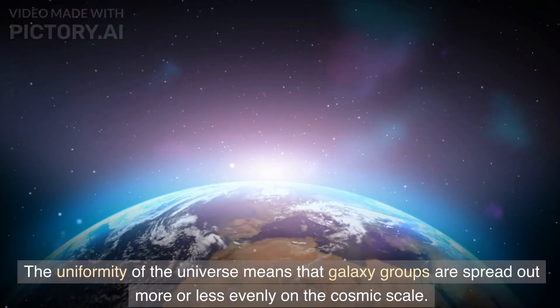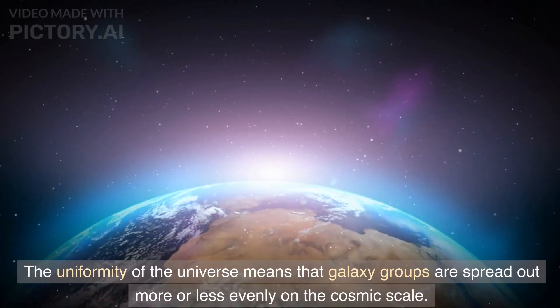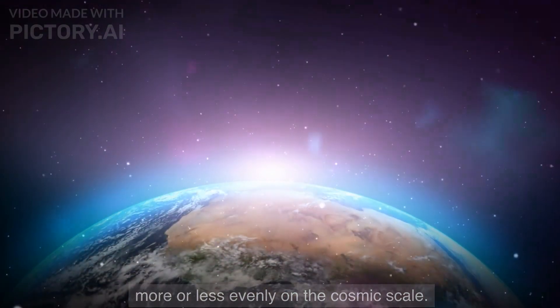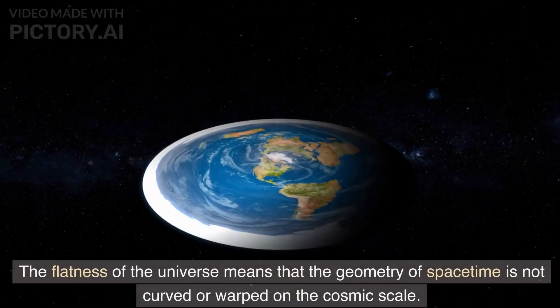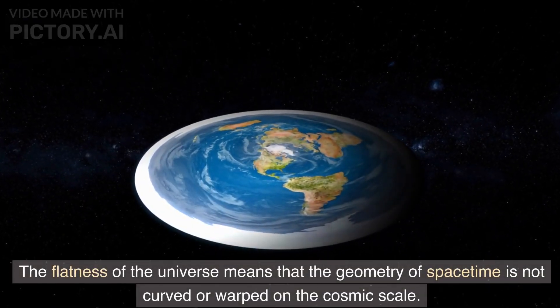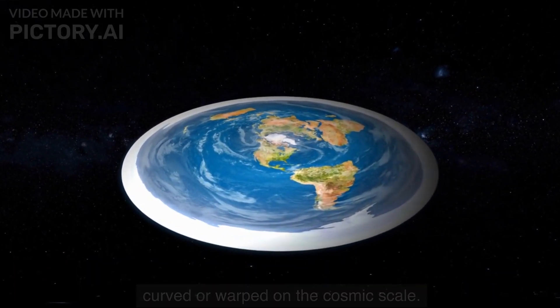The uniformity of the universe means that galaxy groups are spread out more or less evenly on the cosmic scale. The flatness of the universe means that the geometry of spacetime is not curved or warped on the cosmic scale.